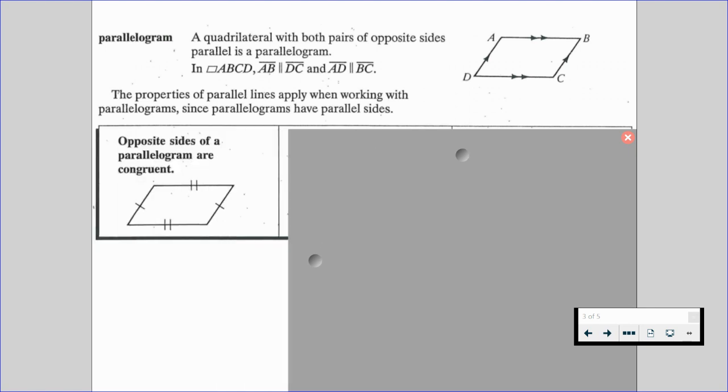We're also going to know that opposite sides of a parallelogram are congruent. So going back to the diagram at the top right, segment AB would be congruent to segment DC, and segment AD would be congruent to segment BC.